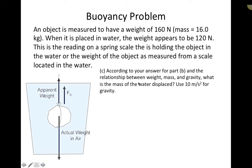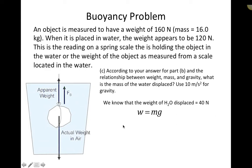The next part asks for the mass of the water displaced. We know from Part B that the displaced water weighs 40 newtons, and we want to find its mass. Using the relationship weight equals mass times gravity, we rearrange to get mass equals weight divided by gravity: 40 newtons divided by 10 gives us 4 kilograms.